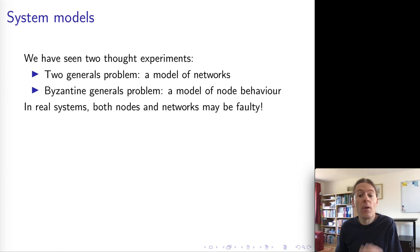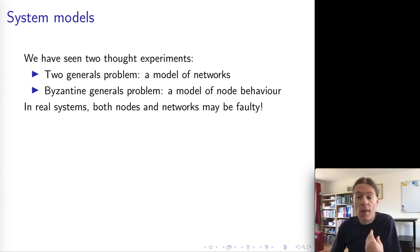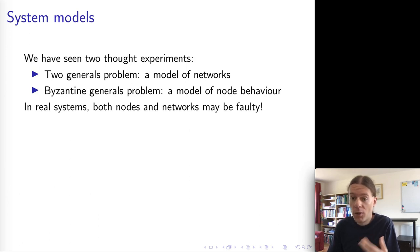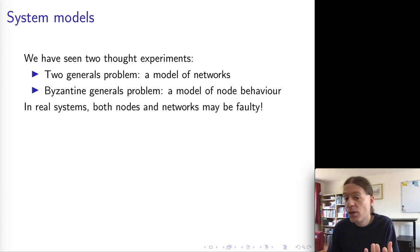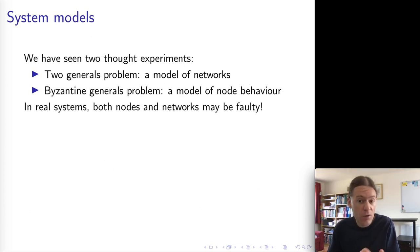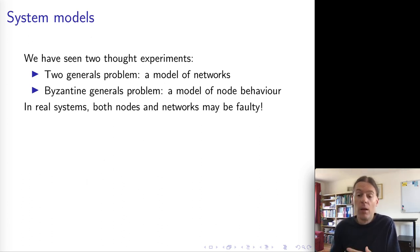We've now seen the two generals problem and the Byzantine generals problem. In the two generals problem we assumed that nodes are honest but messages might get lost. In the Byzantine generals problem we assumed that messages are reliable but nodes might be dishonest.